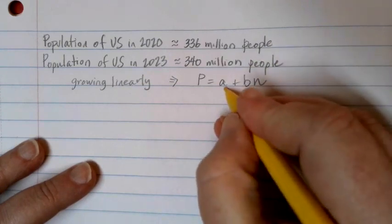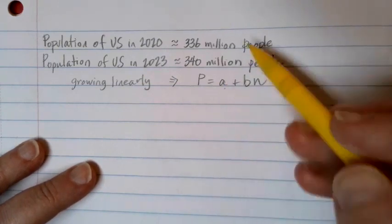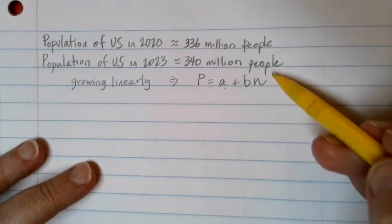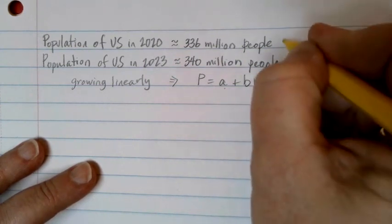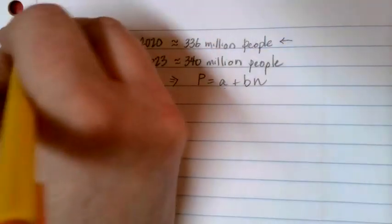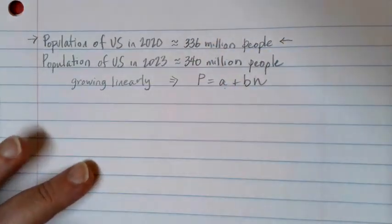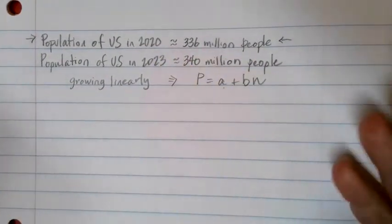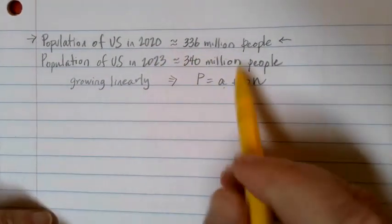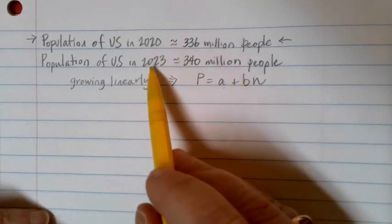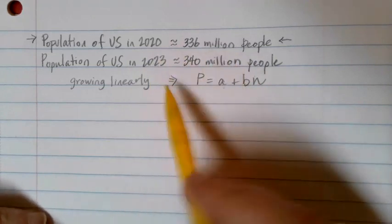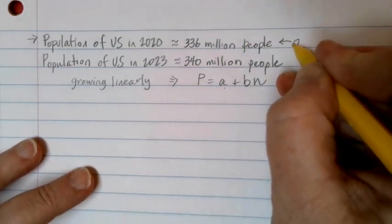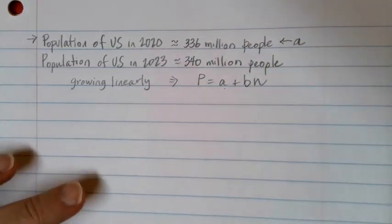The A value is always the starting value. Now, here we have a couple of different numbers. I like to pick the oldest value as my starting value, because it avoids unnecessary negative numbers. And it kind of makes sense, right? You start in 2020, and then you get to 2023. So I'm going to use this 336 million people as A, my starting value.